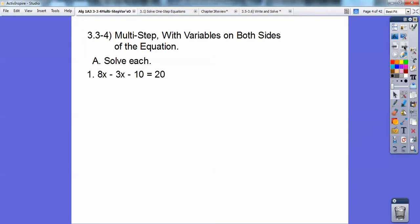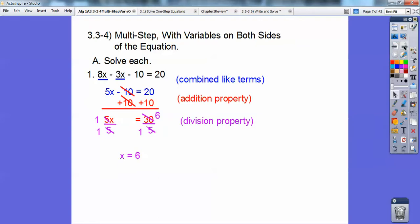So, solve each equation. 8x minus 3x minus 10 equals 20. You might have seen this problem before. In fact, you have. I showed this in a prior video. 5x minus 10 equals 20, because I combined the like terms, 8x minus 3x, and then add 10 to both sides. You get 5x equals 30, and 5 goes into 30 six times.